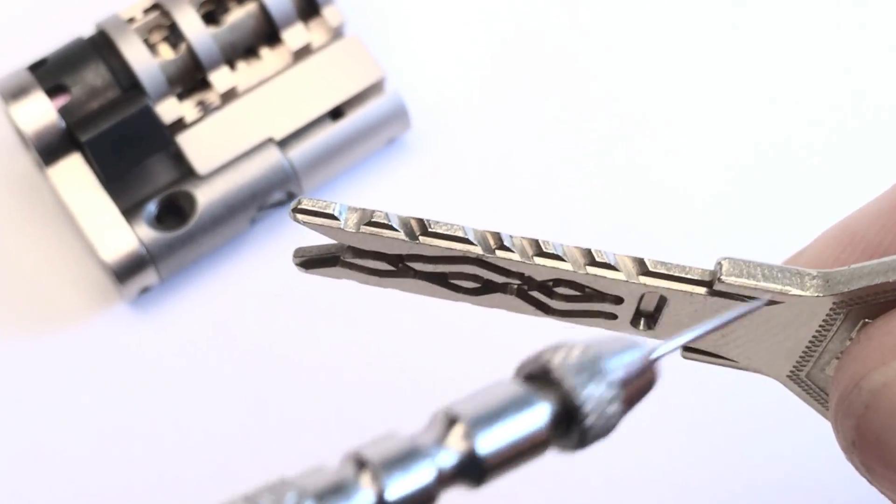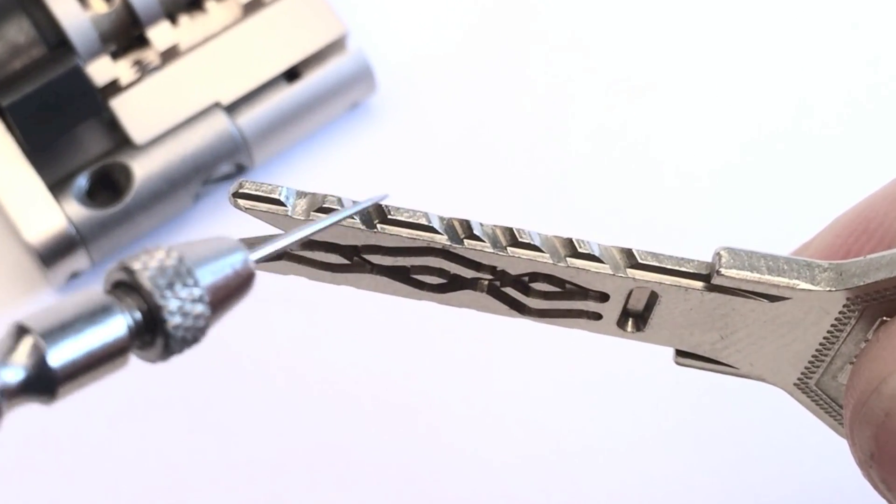Top and bottom of the key blade have cuts which correspond to the passive bottom bar.